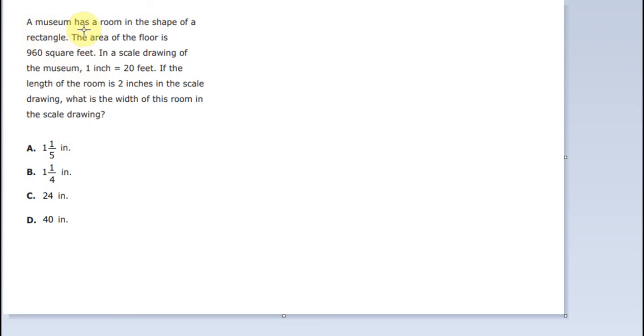A museum has a room in the shape of a rectangle. The area of the floor is 960 square feet. In a scale drawing of the museum, 1 inch equals 20 feet. If the length of the room is 2 inches in the scale drawing, what is the width of this room in the scale drawing?